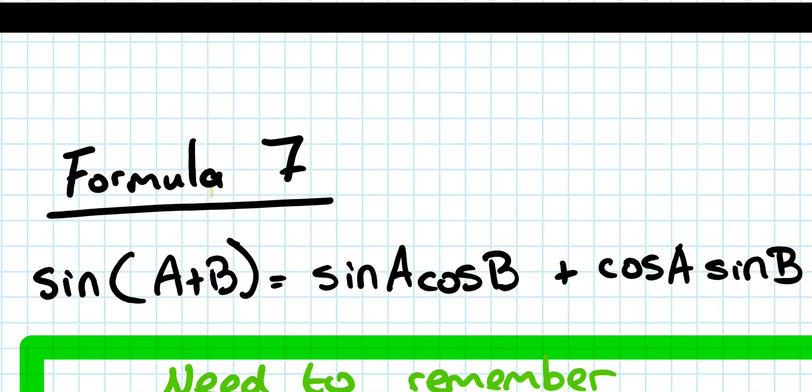Okay, so we're looking at formula 7 here, only 2 more to go, 1 more after this, and we want to prove that sin A plus B is equal to sin A cos B plus cos A sin B.